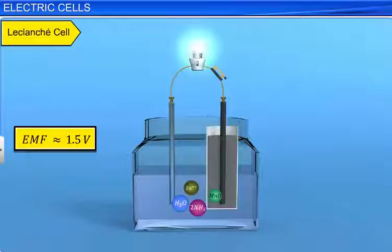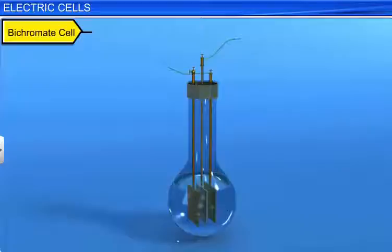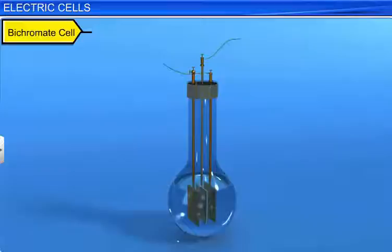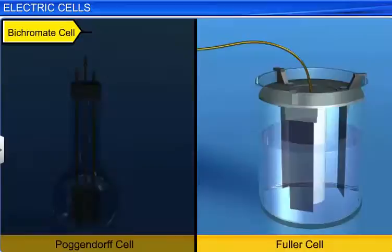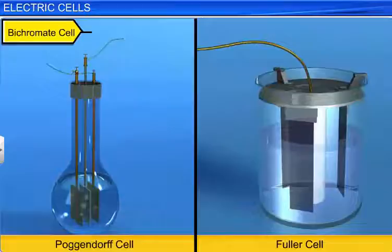Another primary cell is the bichromate cell. In this cell, chromic acid is used as a depolarizer. The chromic acid was usually made by acidifying a solution of potassium dichromate with sulfuric acid. The old name for potassium dichromate was potassium bichromate, and hence the cell was often called a bichromate cell. The cell was made in two forms: the single fluid type attributed to Johann Christian Poggendorf, a German physicist, and the two fluid type attributed to Fuller. In both cases, the EMF produced is of the order of two volts. Here, we will discuss only the first type.